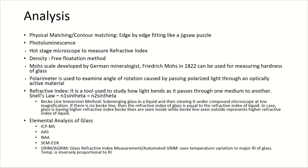For the analysis of glass: first is physical matching or contour matching, which is edge-by-edge fitting of glass particles to see whether they are from the same source. Next is photoluminescence. A hot stage microscope is used to measure refractive index. Density of glass is determined by the free flotation method, in which a beaker filled with a solvent such as water is used. When the glass particle is placed inside the beaker, the volume of liquid displaced by the glass particle is its volume, and density is calculated as mass divided by volume.